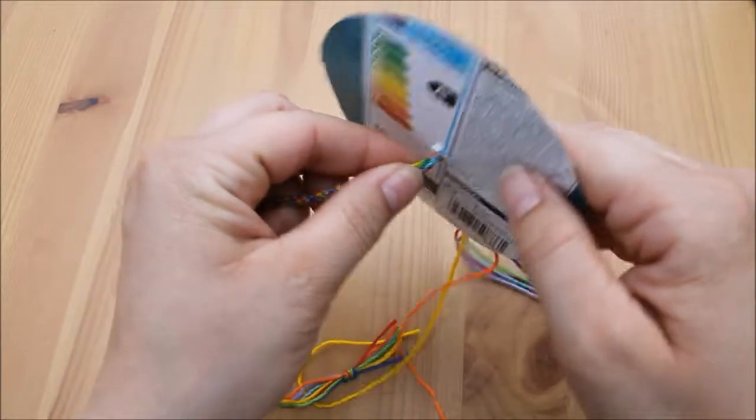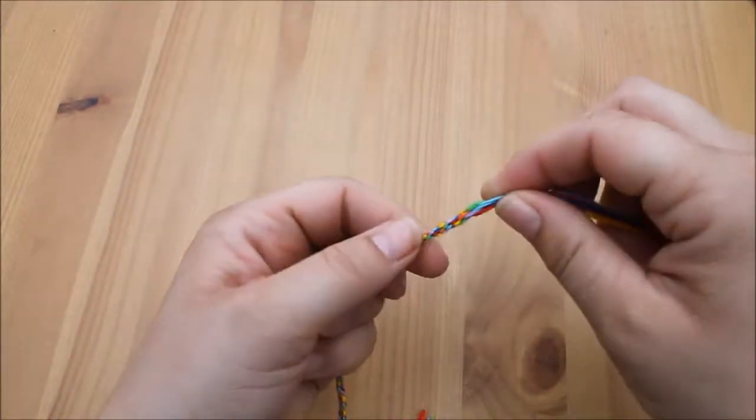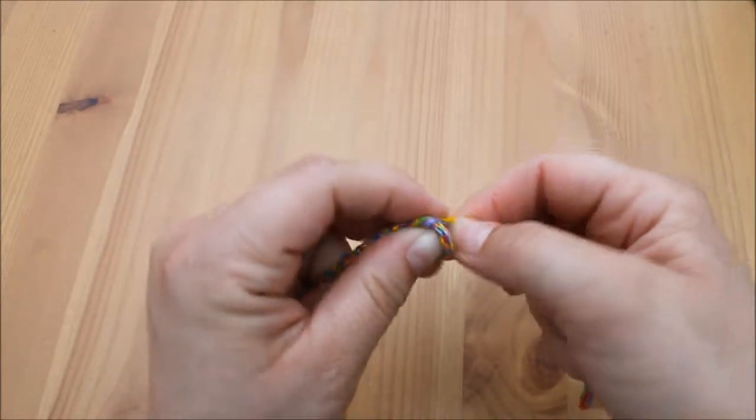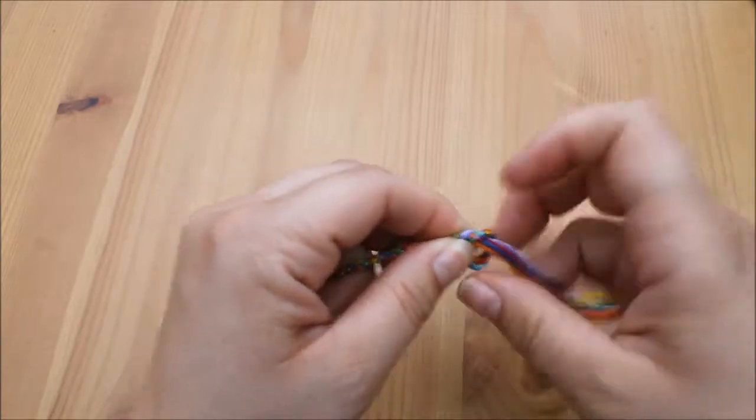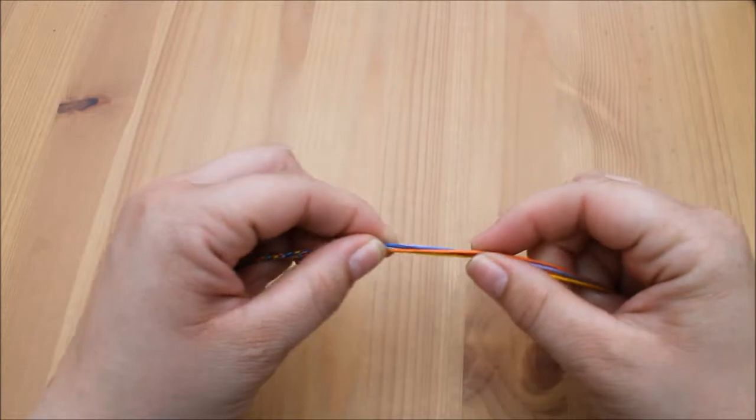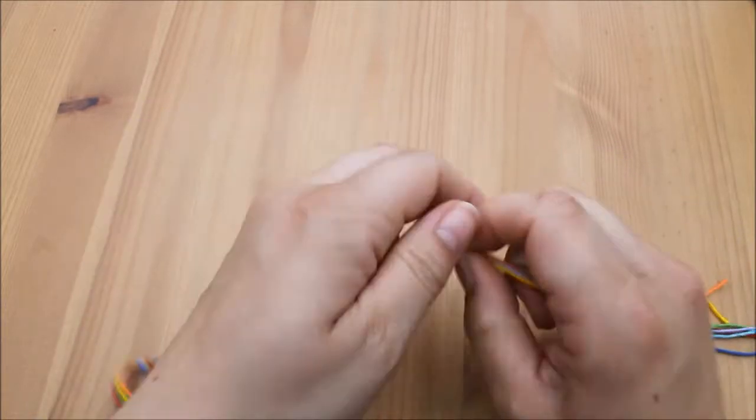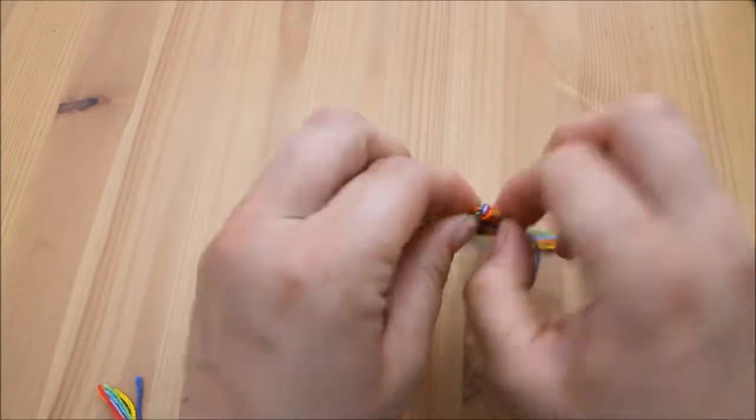And carefully remove the yarn from the cardboard, tie it in a knot, and then again about two inches from the end tie another knot.